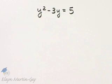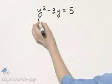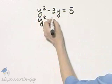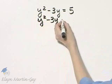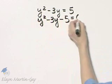I will begin by writing it in standard form. I'll set it equal to zero. So that will be y squared minus 3y, then subtract 5 from both sides, so minus 5 is equal to zero.